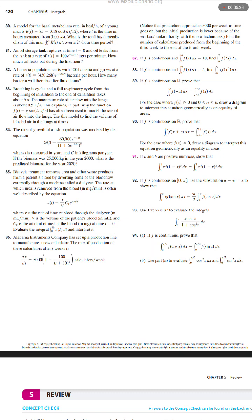Alabama Instruments Company has set up a production line to manufacture a new calculator. The rate of production of these calculators after t weeks is dx over dt equals 5000 times (1 minus 100 over (t plus 10) squared) calculators per week. Notice that production approaches 5,000 per week as time goes on, but the initial production is lower because of the workers' unfamiliarity with the new techniques. Find the number of calculators produced from the beginning of the third week to the end of the fourth week.